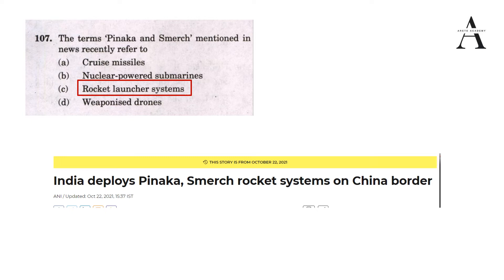Smerch is also a rocket launcher system from which multiple missiles can be launched. It is the longest-range conventional rocket system, with a range of 90 kilometers, and can fire 48 rockets in a span of 40 seconds. This technology is sourced from Russia. DRDO has since developed an extended range version and transferred the rights to industry partners for production and testing.